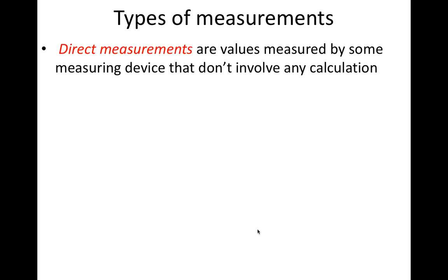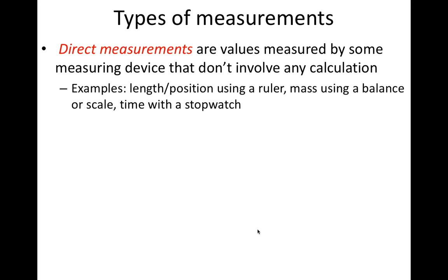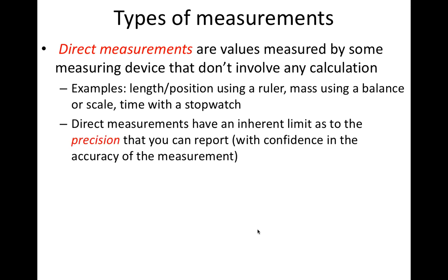In an experiment, there are two types of measurements. A direct measurement is a value measured by some device that does not involve any calculation. For example, we might use a ruler to measure the length of an object, or a stopwatch to measure time. Any direct measurement has an inherent limit on precision. For a scale measurement, precision is mostly determined by the size of the smallest mark on the scale. Some rulers have markings every quarter inch, while others have markings every millimeter. Because a millimeter is smaller than a quarter inch, the millimeter ruler is more precise.